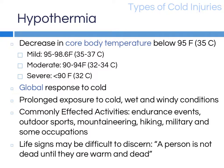Hypothermia is defined as a decrease in body temperature below 95°F (35°C). Mild hypothermia is a drop in temperature between 95 and 98.6°F; moderate hypothermia between 90 and 94°F; and severe hypothermia below 90°F. Hypothermia is a global response to cold, resulting after exposure to cold, wet, and windy conditions. Those most at risk are athletes and those in occupations exposed to these conditions.